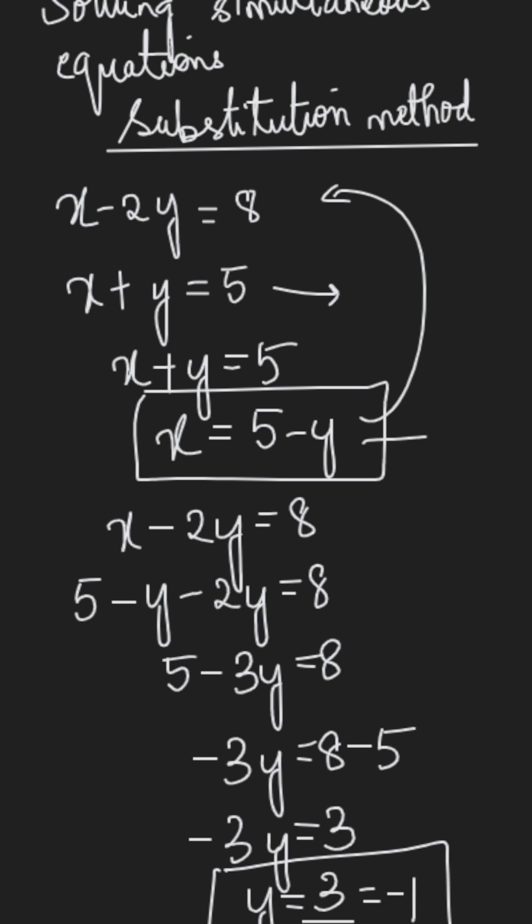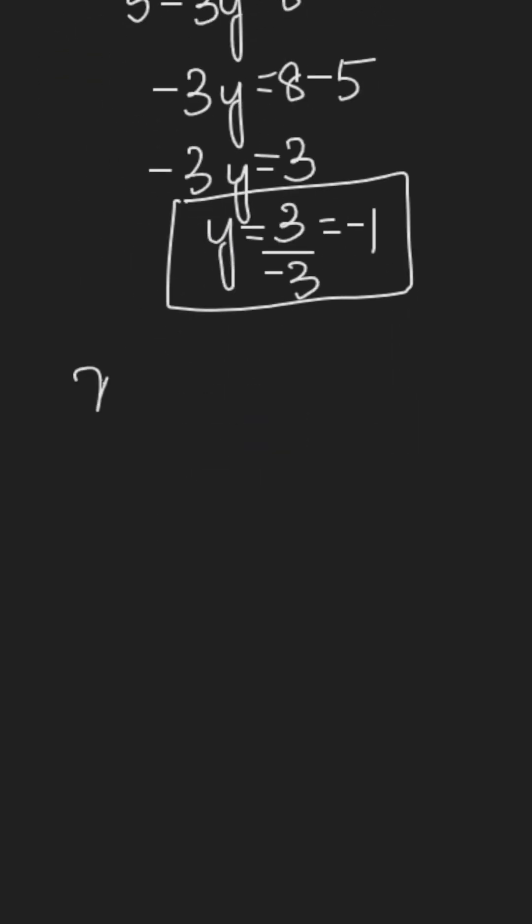We are putting it in the first equation which is x plus y equal to 5. x plus y equal to 5. Now I know the value of y as negative 1 and negative 1 is equal to 5 plus 1 which is equal to 6.